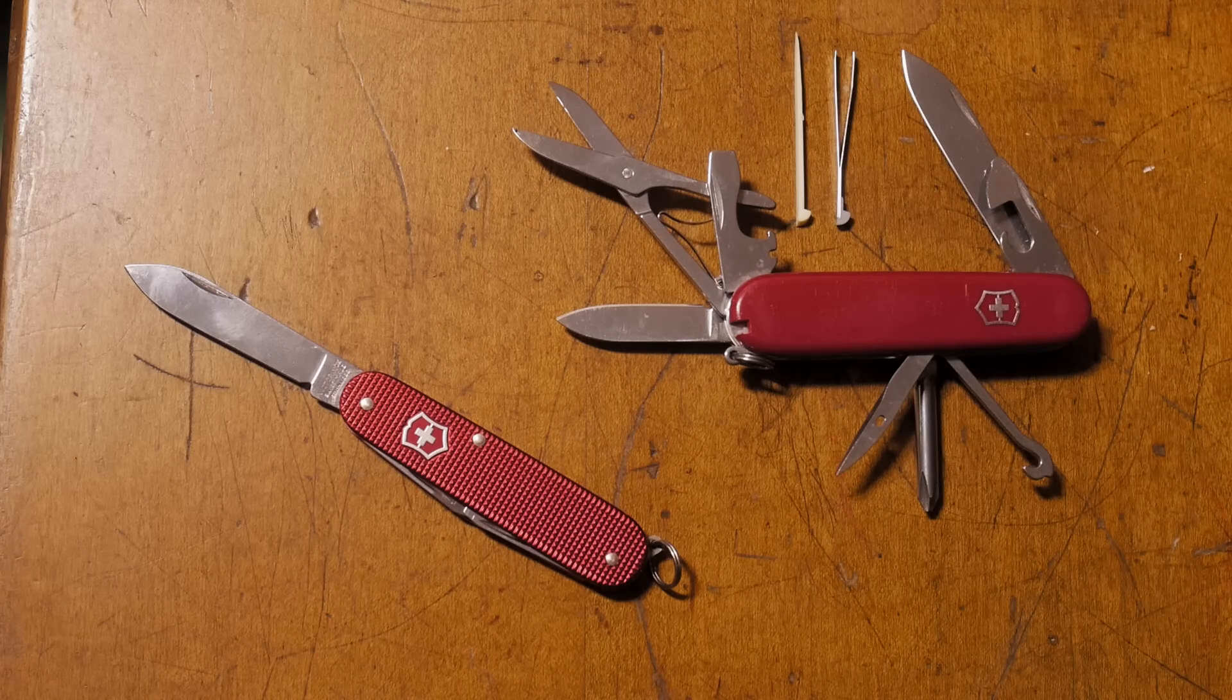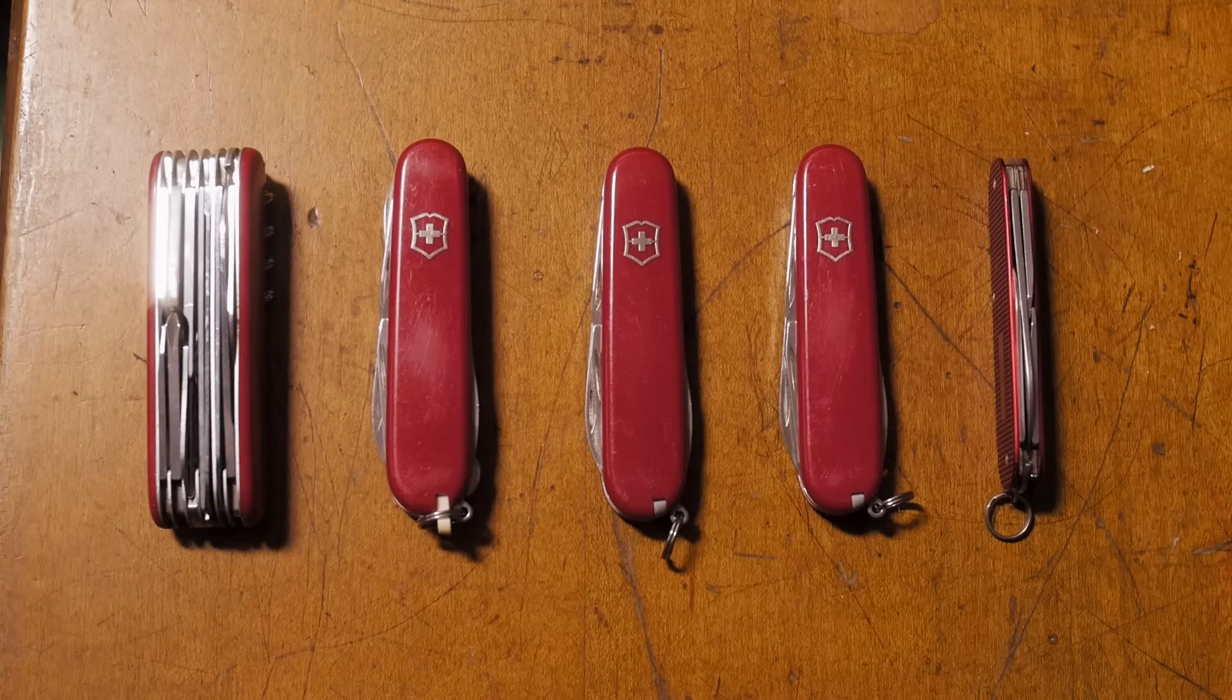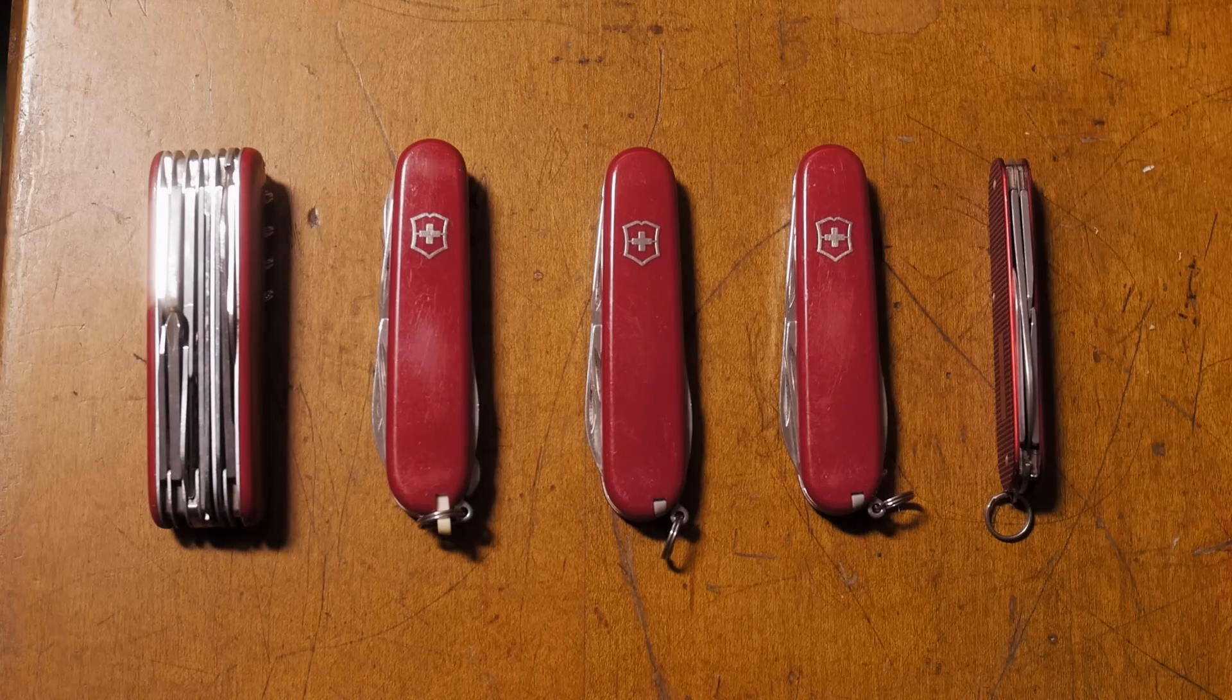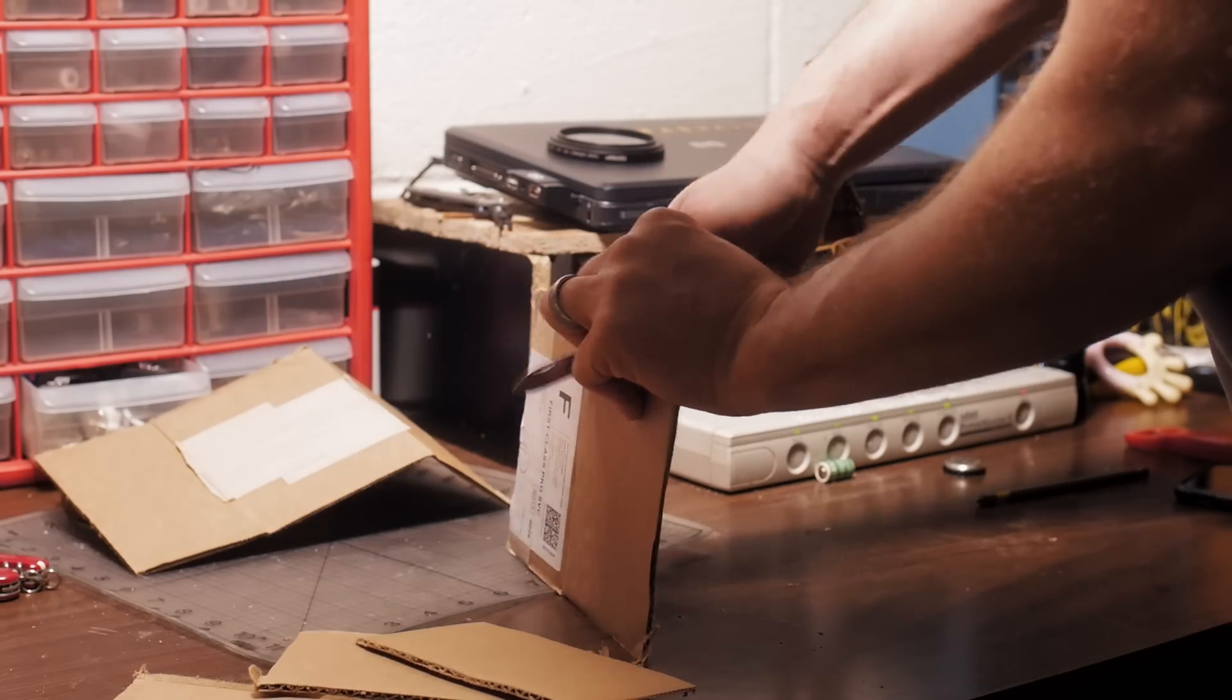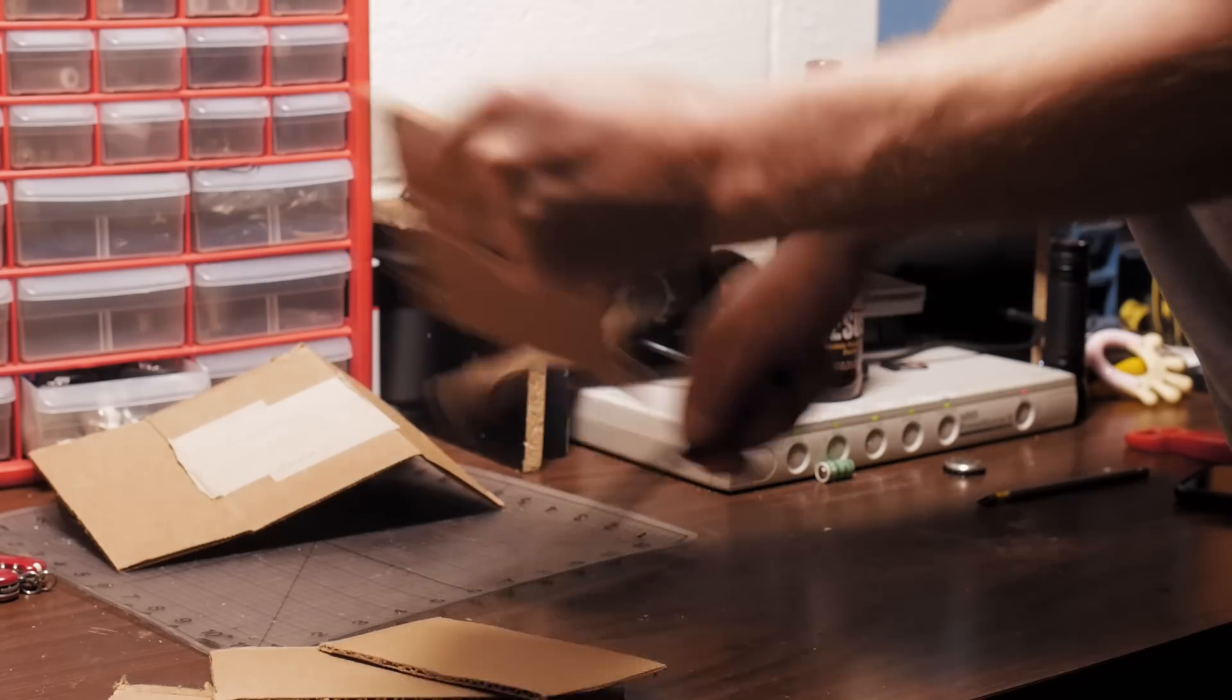Generally the Swiss army knives that have the aluminum sided handles don't come with the tweezers and toothpicks integrated in the handle. But on the other hand the aluminum is durable, gives a nice worn look over time and is much thinner.